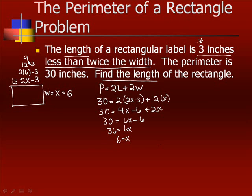Now, does it check? 3 inches less than twice the width, so if the width is 6, twice the width would be 12. 3 less than that would be 9. That part checks. Is the perimeter 30? Well, if this is 9, this is 9, this is 6, this is 6. If you add up all 4 sides, yes, we do get a perimeter of 30. So now let's answer the question. Find the length. Well, we said up here that the length was 9, and we're doing inches, so the length would be 9 inches.